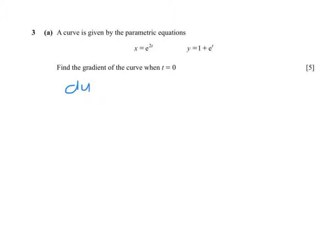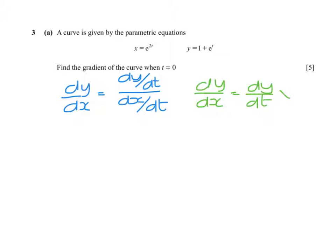the differential dy/dx is dy/dt divided by dx/dt, and that comes from the chain rule, which would be dy/dx equals dy/dt multiplied by dt/dx, which is dy/dt divided by dx over dt.